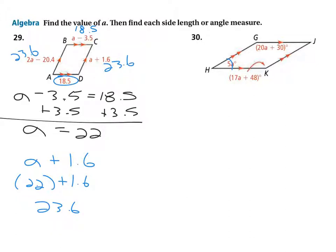Now here we've got this angle here, and then we've got these angles that are equal in measure. So I'm going to take those two, since we have expressions for those two, and set them equal to each other: 17a plus 48 equals 20a minus 30 - I'm sorry, plus 30.